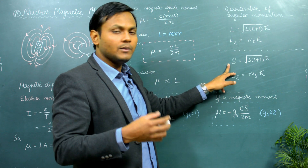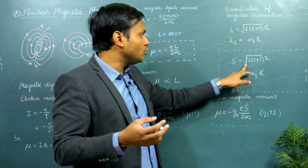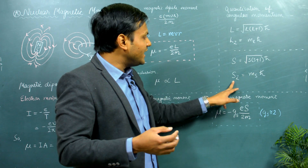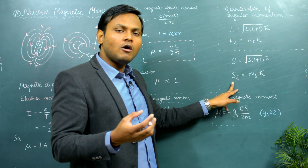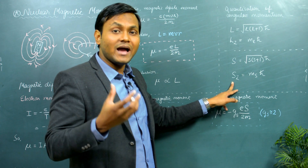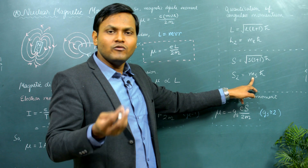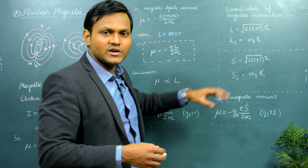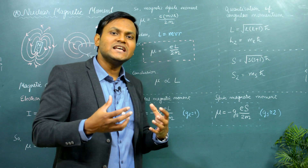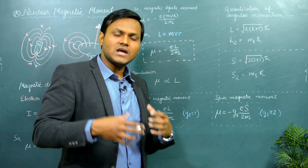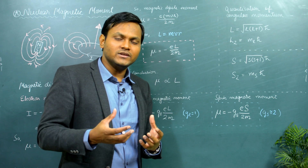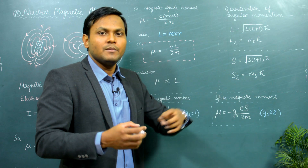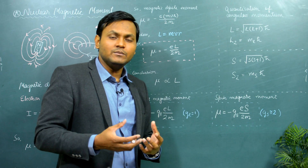L_z basically gives you the component of the orbital angular momentum in the direction of an external magnetic field. The magnitude of the spin angular momentum is √(s(s+1)) ℏ, where s can take a value of 1/2, and s_z is the component of the spin angular momentum in the direction of an external magnetic field, where m_s can take two values of ±1/2. If you are interested in how these expressions came about and their physical meaning, I will put a link to that video in the description.